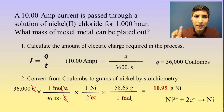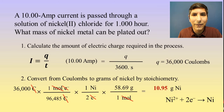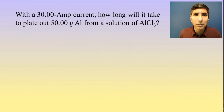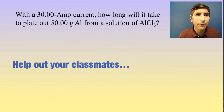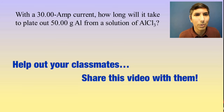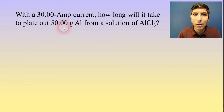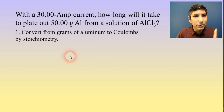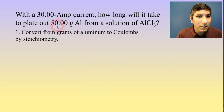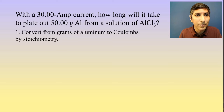We've got to calculate the charge and then figure out the grams of nickel using those same three stoichiometry steps: convert to moles, mole ratio, then convert to final unit. Let's do one more problem. With a 30 amp current, how long will it take to plate out 50 grams of aluminum from a solution of aluminum chloride? We have the amps and we're being asked to calculate time, so our first step needs to be to determine the number of Coulombs.